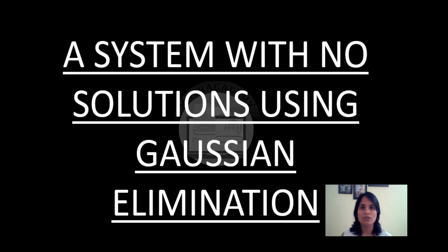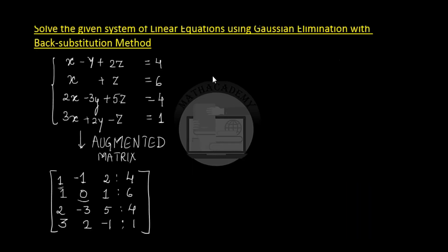Let us learn this through an example. If we have a system of linear equations: x minus y plus 2z equals 4, x plus z equals 6, 2x minus 3y plus 5z equals 4, and 3x plus 2y minus z equals 1, we have to solve the given system using Gaussian elimination.